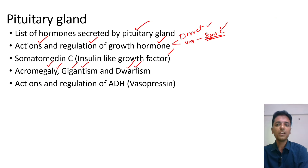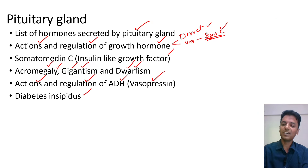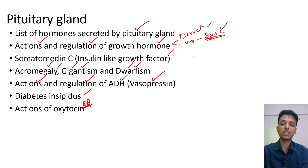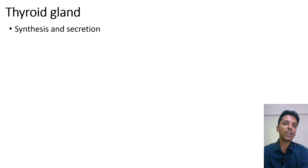Coming to the posterior pituitary, there are two hormones. First, vasopressin — its actions and regulation can be asked, and the clinical question on diabetes insipidus is very important. They can give a clinical case scenario and ask you to identify the condition. Second, the actions of oxytocin are a very favorite question: one is milk ejection and another is parturition. The milk ejection reflex, also called the neuroendocrine reflex, is a very favorite question among examiners.